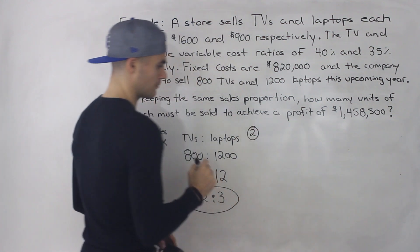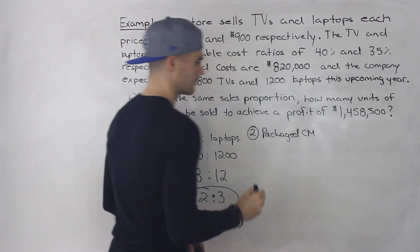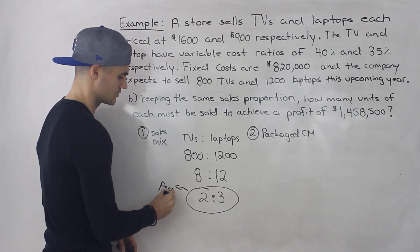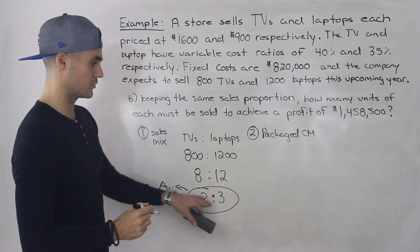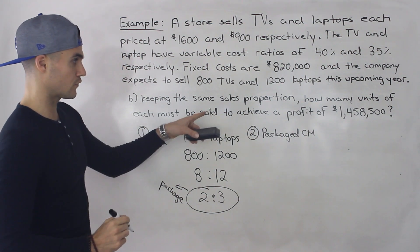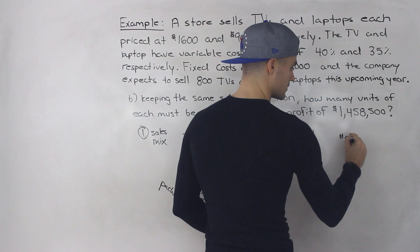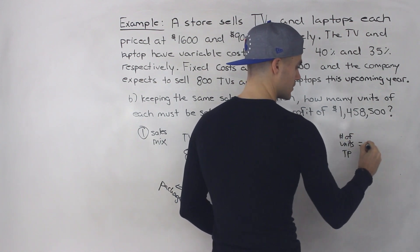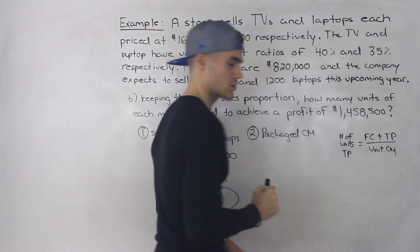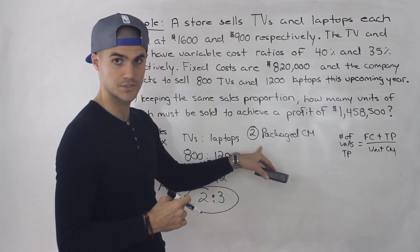Next we need to get the packaged contribution margin. We pretend we're selling two TVs and three laptops as one package. The formula for number of units to sell for a target profit is: fixed cost plus target profit divided by the unit contribution margin. Since we're dealing with multiple products, we need a packaged contribution margin as our unit contribution margin.